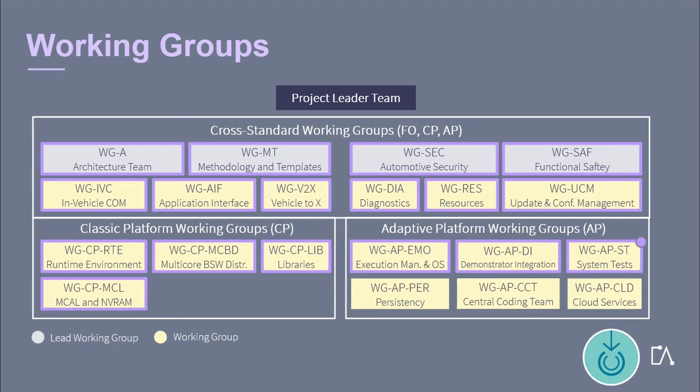The Working Group Adaptive Platform System Test is responsible for the definition and execution of system tests for the AUTOSAR Adaptive Platform. System tests should be based on system test specifications derived from the requirement specification and should cover all testable RS requirements. Additionally, the Working Group is responsible for implementing applications used for system tests and demonstrations of the capabilities of the AUTOSAR Adaptive Platform.